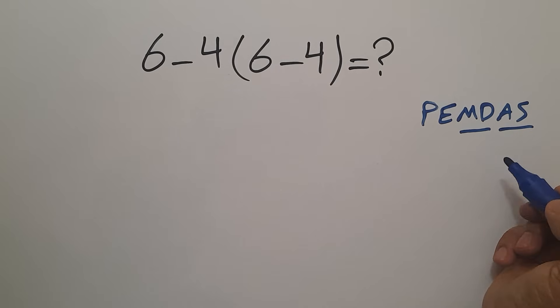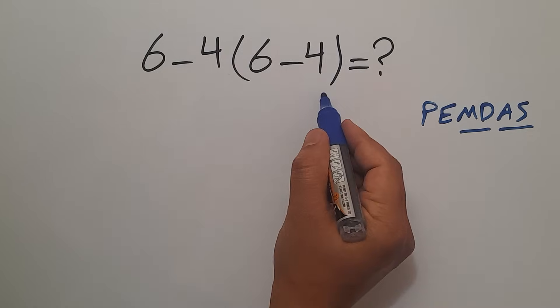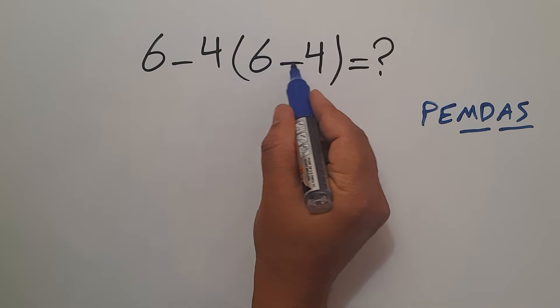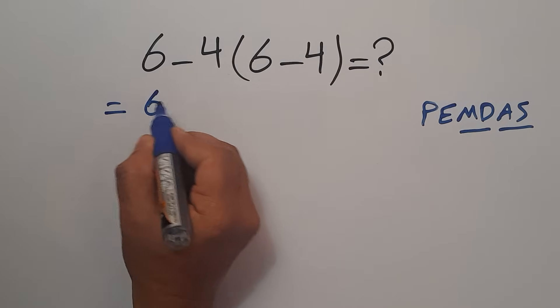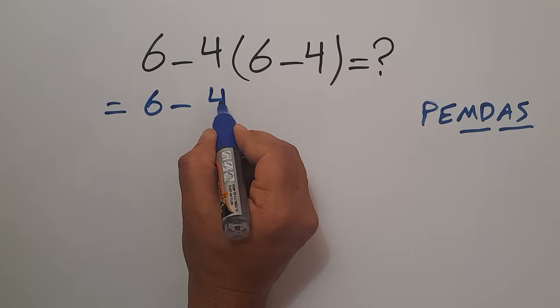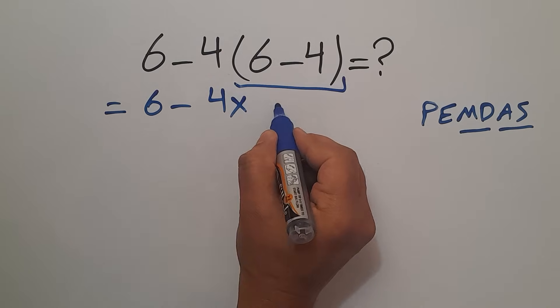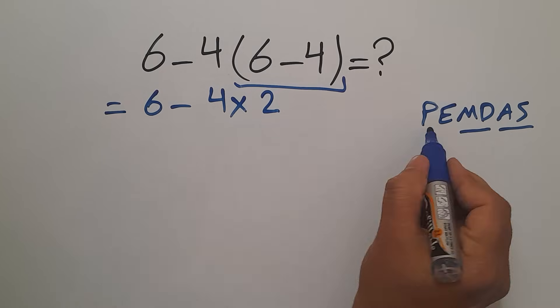So here first we do this parentheses. Inside these parentheses we have 6 minus 4 which equals 2. So here we have 6 minus 4, and 4 times this parentheses which equals 2.